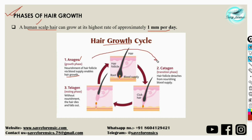From the anagen phase, hair shifts to the catagen phase — the transition phase — where the hair follicle detaches from the nourishing blood supply and essentially becomes dead, so the hair stops growing. This is also called the stage of death. The third phase is the telogen phase, also called the resting phase, where the growth cycle ends, the hair dies, and falls out — commonly known as hair fall.